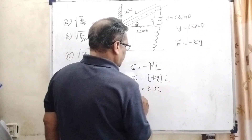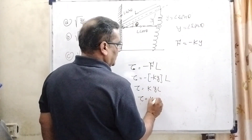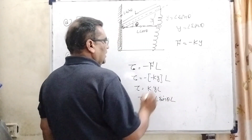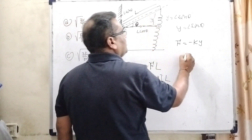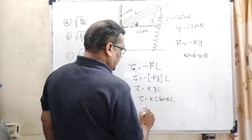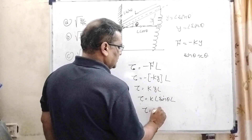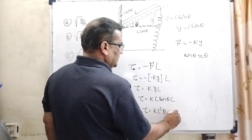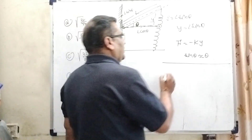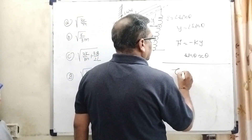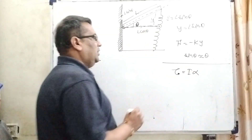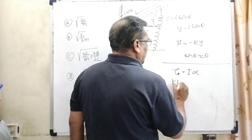So tau equals plus k·y·L. Here y is a component, and y can be written as L sin theta. Substituting y = L sin theta: tau equals k·L·sin theta·L. Since the angle is very small, sin theta can be approximated as theta. So tau equals k·L²·theta. This is the first equation.